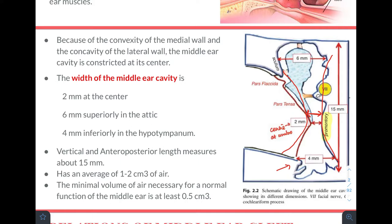The vertical and anterior-posterior length of the middle ear cavity measures about 15 mm, and the volume of the middle ear is 1 to 2 cubic centimetres of air. An important factoid: the minimum volume of air necessary for normal functioning of the middle ear is at least 0.5 cubic centimetres.